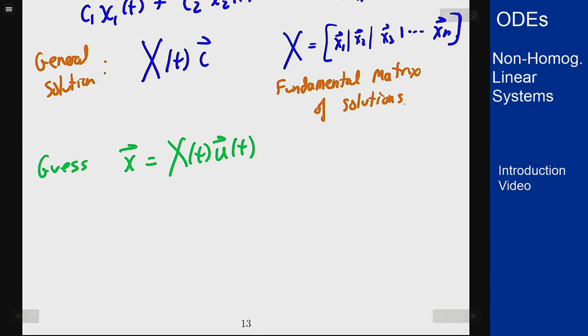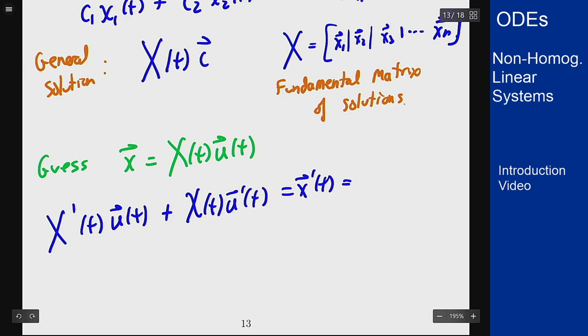Now little x' we can find by the product rule. It's going to be big X'(t) times the vector u(t) plus X(t) times the vector u'(t). This is x' which I would now want to equal A times little x plus f.